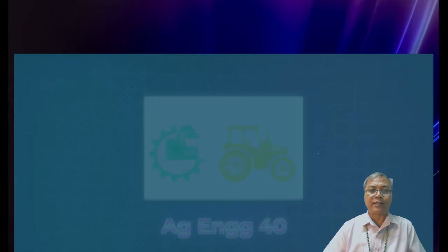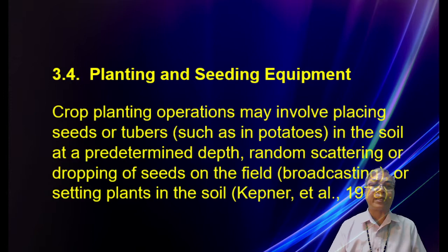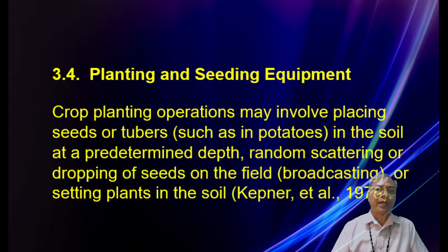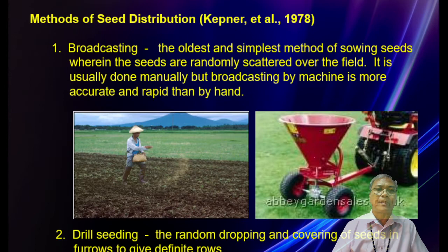Good morning class. We are going to continue Part 2 of our farm machinery, focusing on planting and seeding equipment. Crop planting operations may involve placing seeds or tubers such as potatoes in soil at a predetermined depth, random scattering or dropping of seeds in the field by broadcasting, or setting plants in the soil.